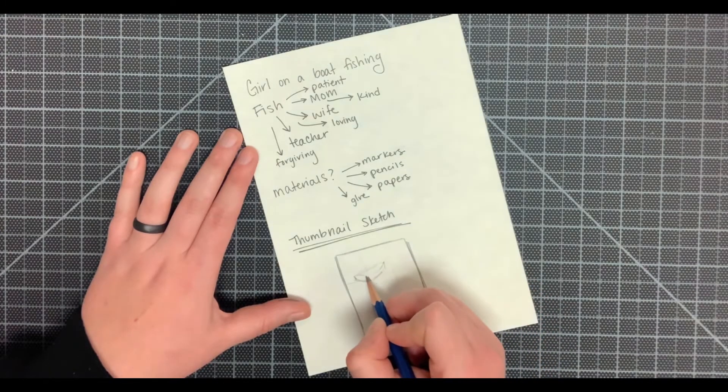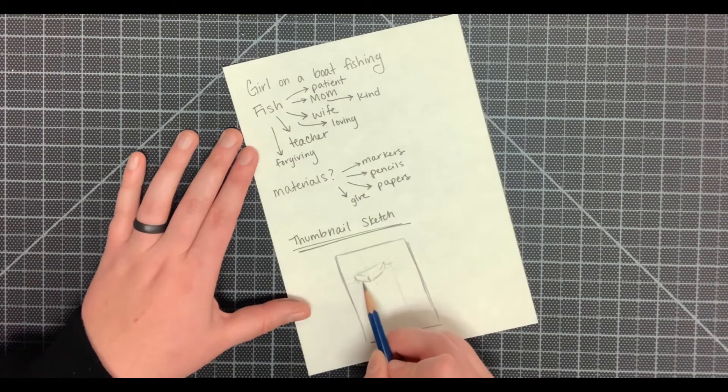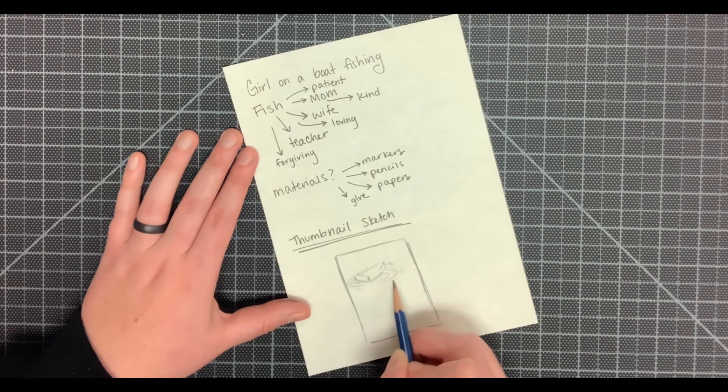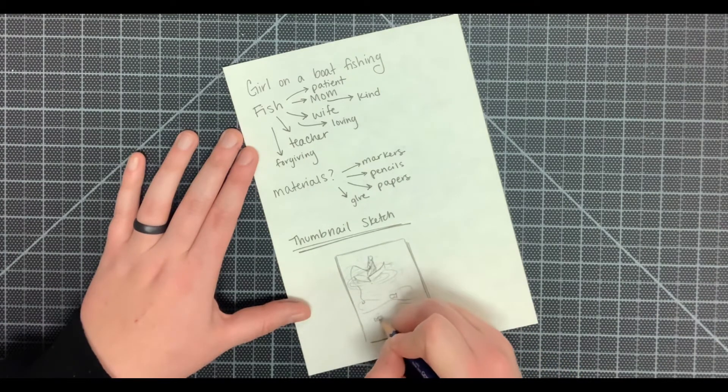I'm applying the rule of thirds, and I'm going to be placing the woman who represents me fishing on the boat in that upper left-hand side of my rule of thirds connecting point. I'm then going to be placing the fish as cut out pieces of paper in the area below.